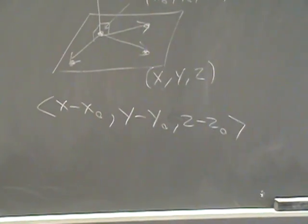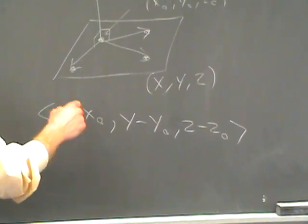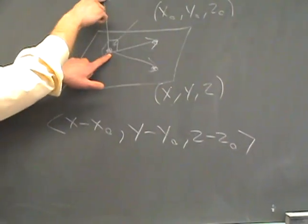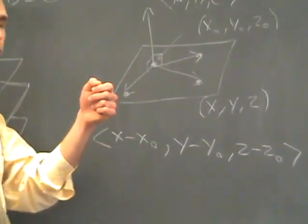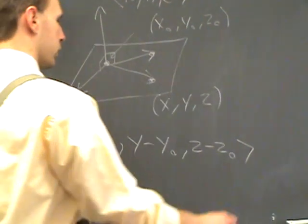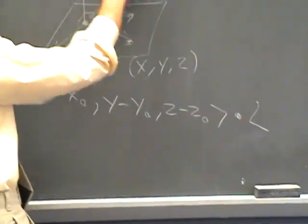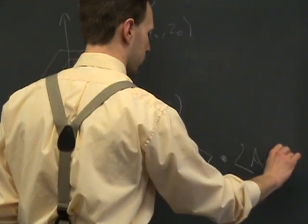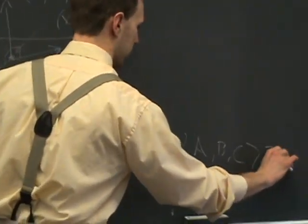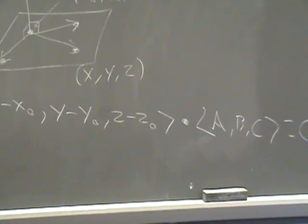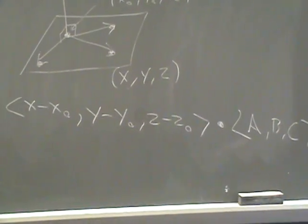And what property does that have? Well, for any point X, Y, Z, when you dot that vector with this vector, you should get zero because they're going to be perpendicular. So the equation we're going to be working with is this dot the given equals zero.